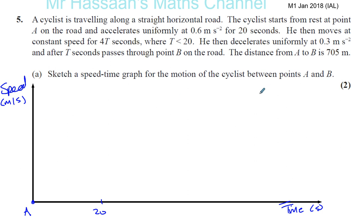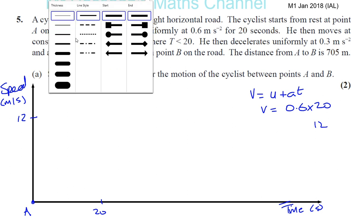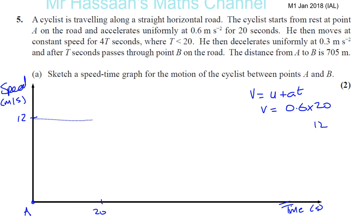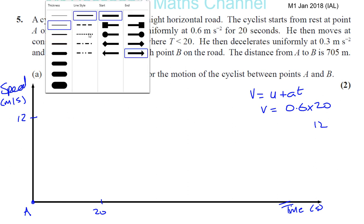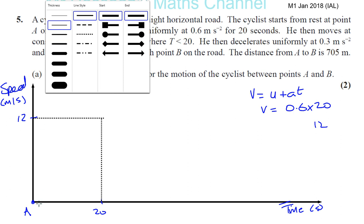Using V equals U plus AT, we know U is 0 and A is 0.6. So the speed he reaches is 0.6 times 20, which gives 12 meters per second. So he reaches 12 meters per second after 20 seconds. So the graph goes up in a straight line from the origin to 12 meters per second at 20 seconds.